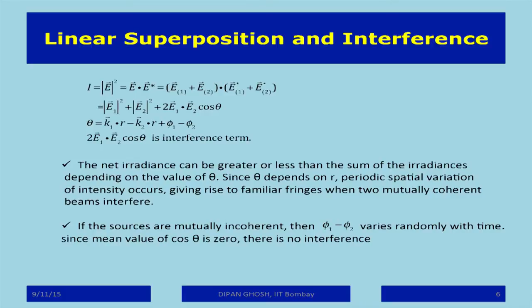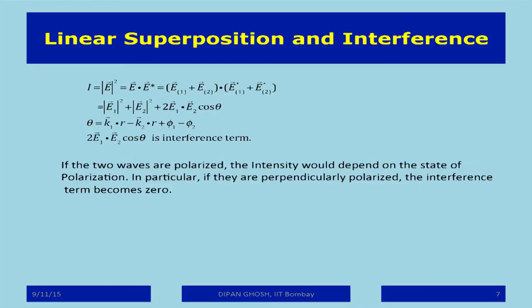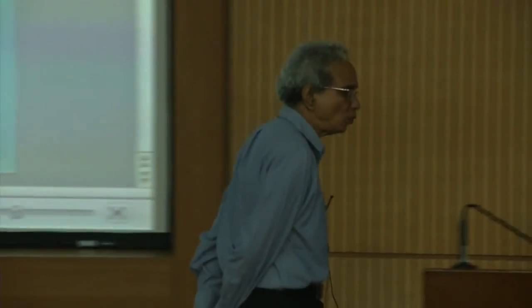The new thing to point out is that if E1·E2 equals zero — irrespective of what the phase difference between them is — the interference term is also zero. E1·E2 will be zero if the two polarization vectors are perpendicular to each other. This has been experimentally verified: you cannot have interference between left circularly polarized light and right circularly polarized light.